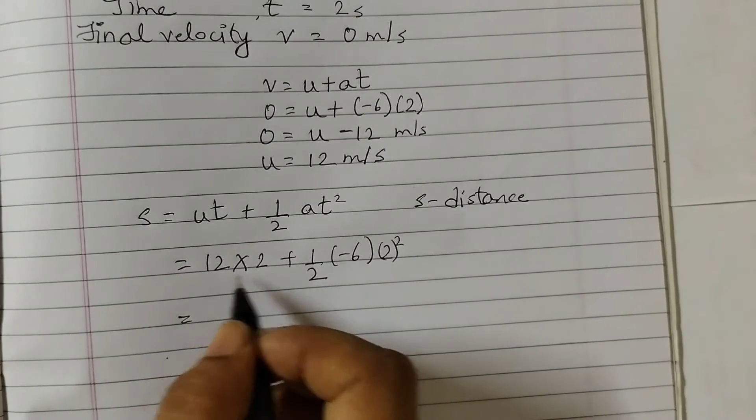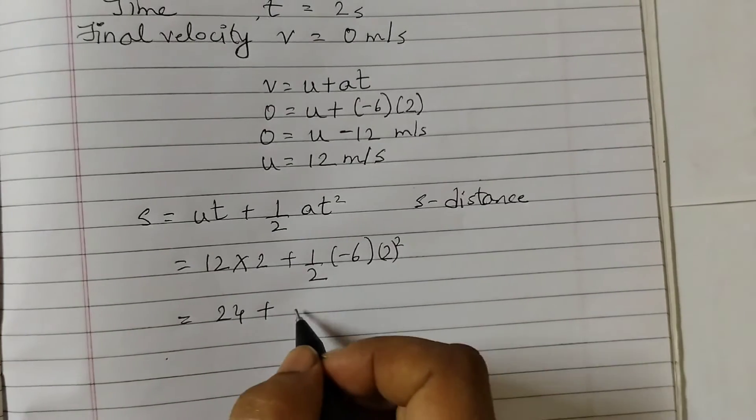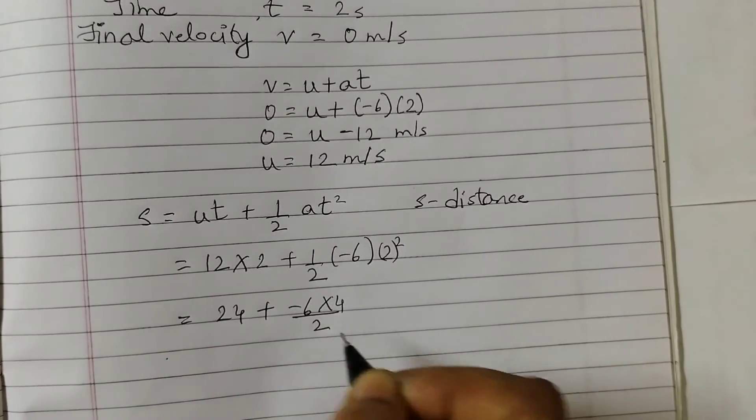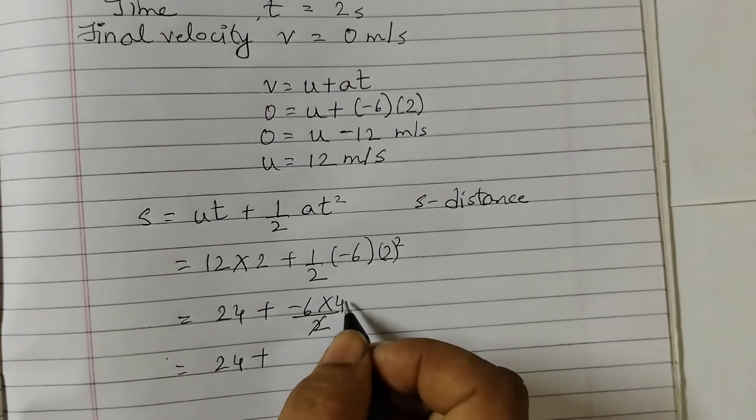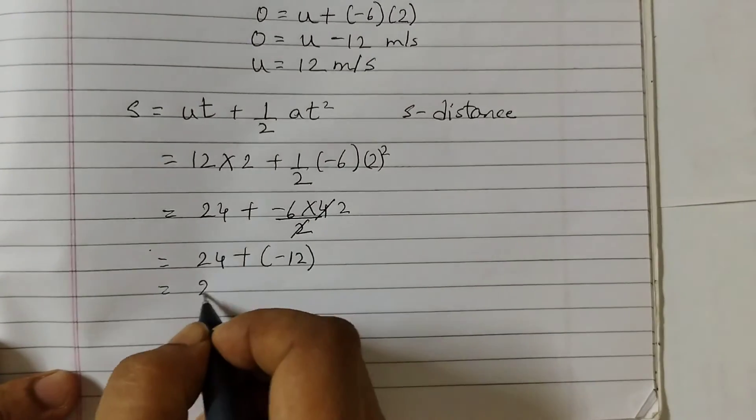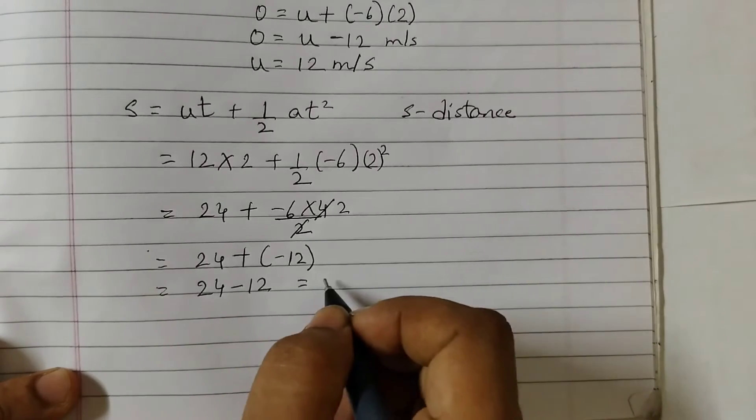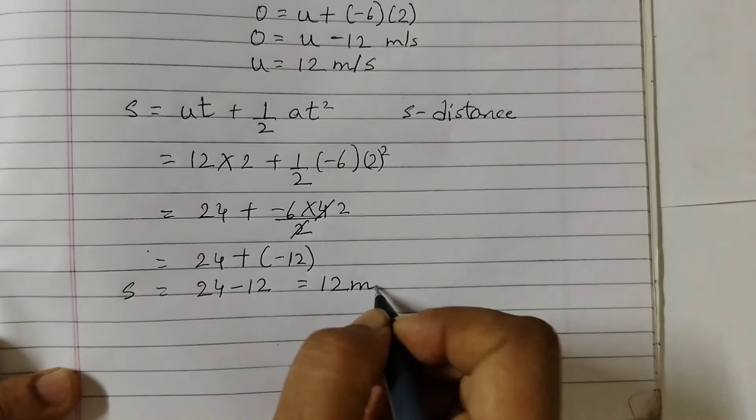We will simplify this. So this is 12 times 2 is 24, plus minus 6 into 4 divided by 2. So this is 24 plus minus 12. This is 24 minus 12 and that equals to 12, and since this is the distance, that is in meters.